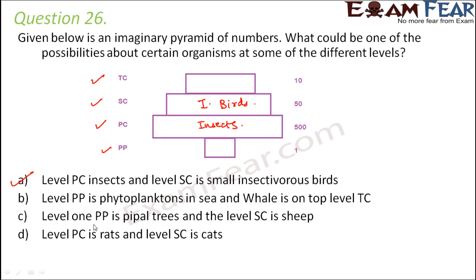For example, option C says level PP is trees and the secondary consumer is sheep. That is also not true because sheep generally feed on grasses, so they should fall under the category of primary consumers and not secondary consumers. The last option has level PC as rats — primary consumer as rats. Now primary consumers are generally herbivores, but rats are not herbivores; rats also feed on other small insects or organisms. So rats should occupy secondary consumer level, not primary consumer level. Therefore options B, C and D are not correct, but option A could be one of the possibilities about the organisms at different levels of this pyramid.